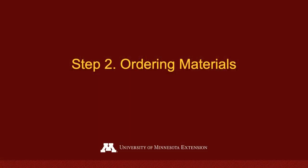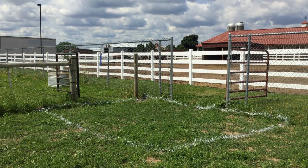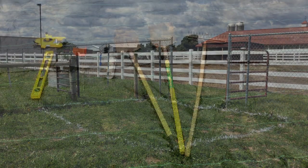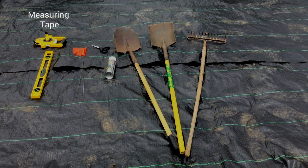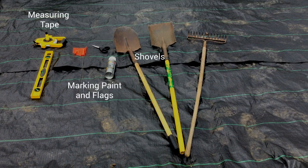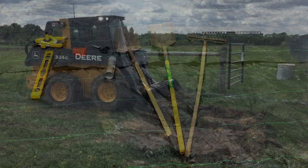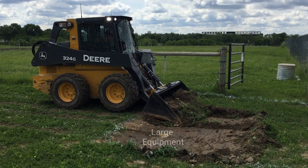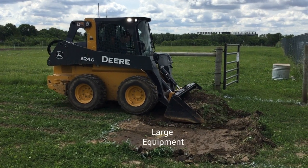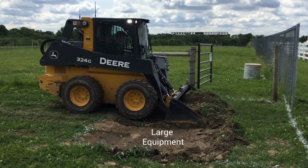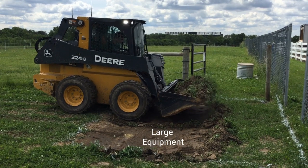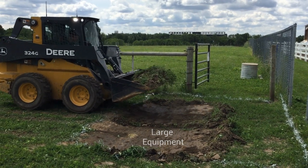Now that you have identified your site, you can order supplies based on the desired size of your high traffic pad. The supplies you will need are a measuring tape, marking paint and flags, and excavation equipment including shovels for small areas and detail work, and large equipment for larger jobs. Today we will be demonstrating how to use a skid loader with a bucket attachment for excavation and stone fill.